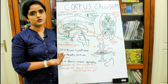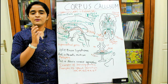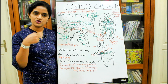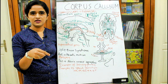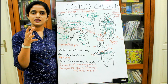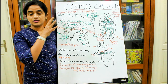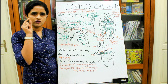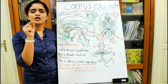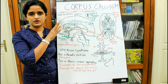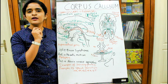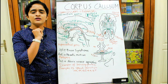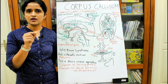The first and foremost function of the corpus callosum is the transfer of learning process. Suppose you are training your right hand to write something. That information is actually processed in your left cerebral hemisphere, because if you are a right-handed person, your dominant hemisphere is the left hemisphere, which controls the right side. That information will be stored in the left hemisphere.